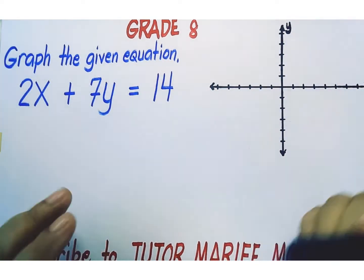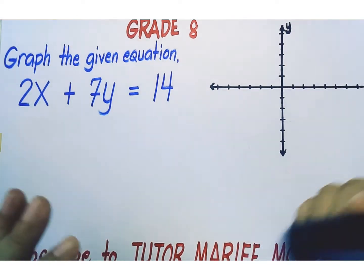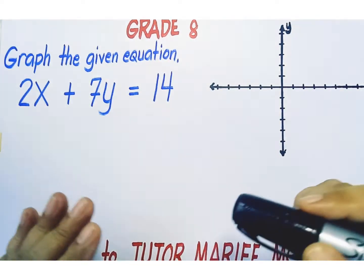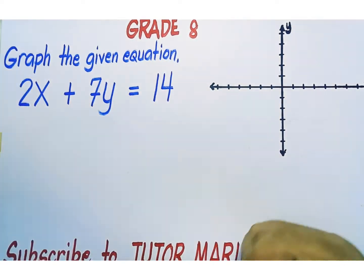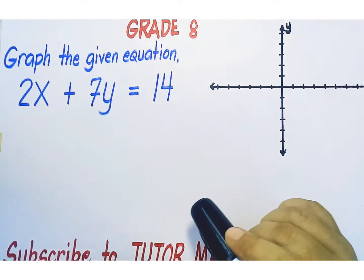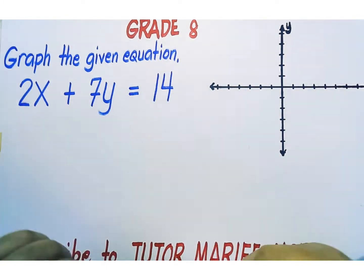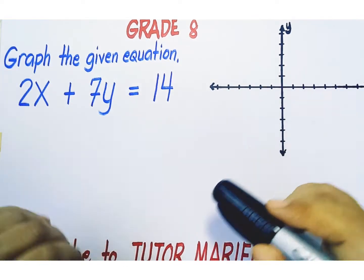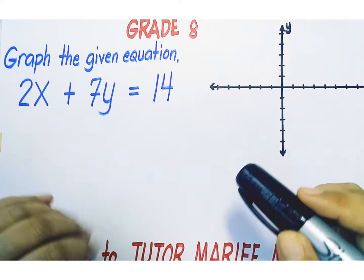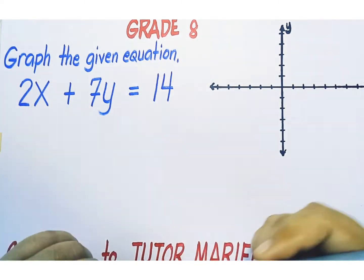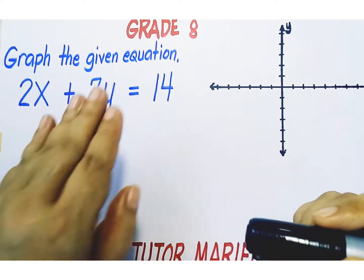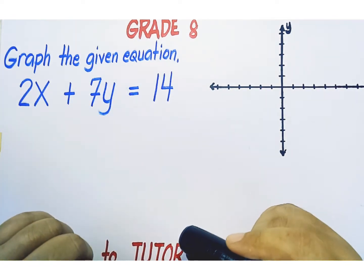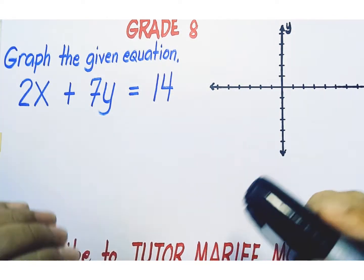There are actually three ways to graph this given equation. One way is by finding two points and then plotting those points. Another way is by using the slope and the y-coordinate of the y-intercept, and for that you need to rewrite the given equation into y = mx + b form,